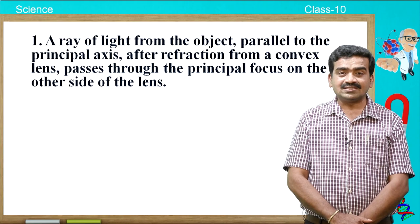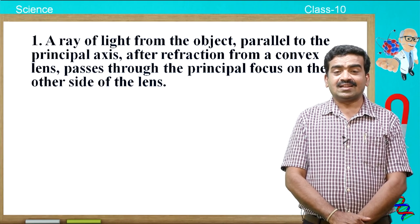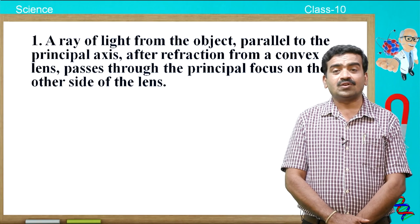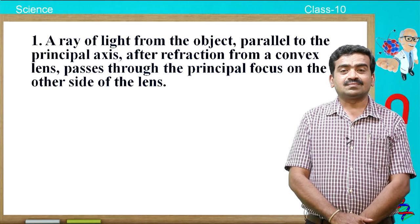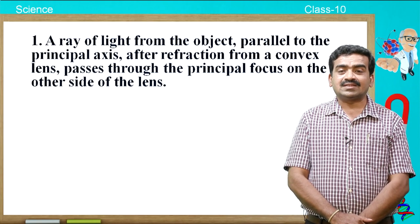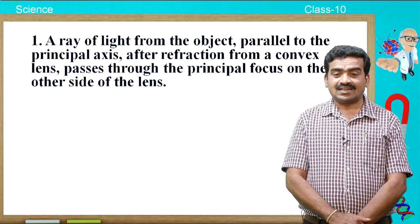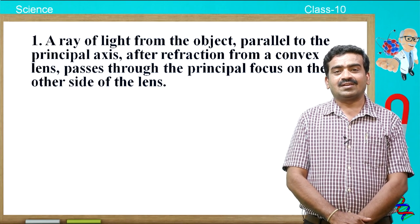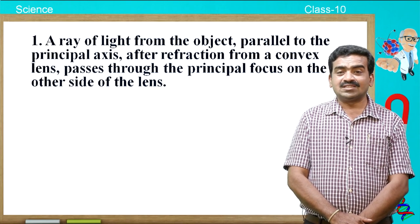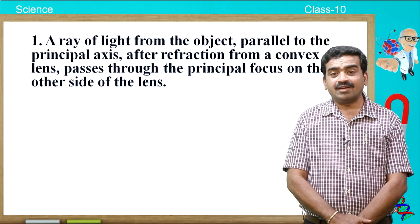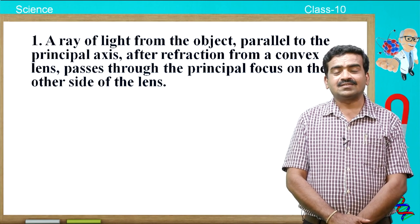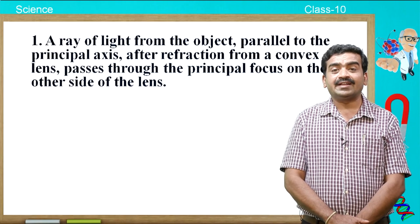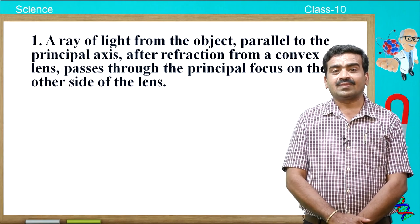Let us understand how the image is going to be formed in case of convex as well as concave lens, and let us learn about image formation in lenses using ray diagrams. Before going to learn this, let us understand how the ray of light is going to be refracted in case of convex as well as concave lens. The ray of light passing through the lens behaves differently depending upon how it enters the lens.